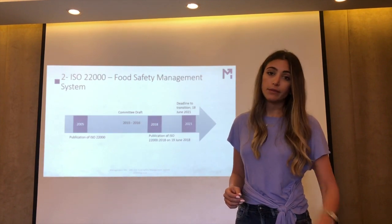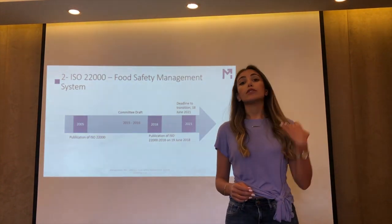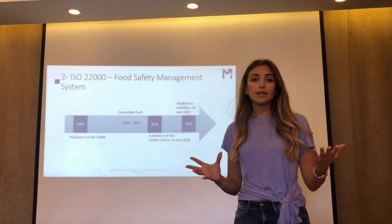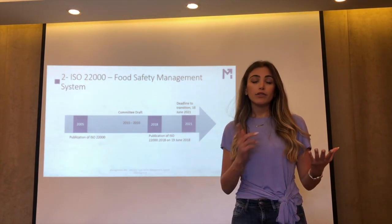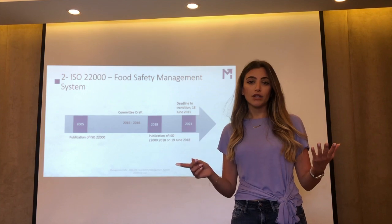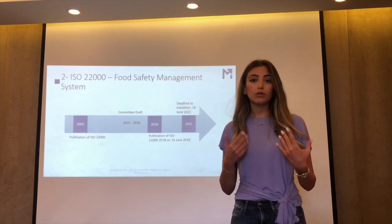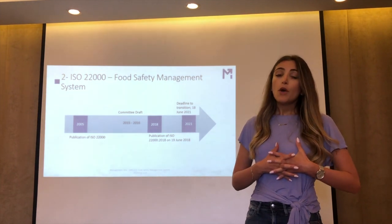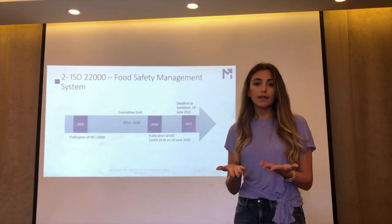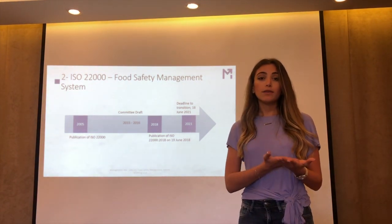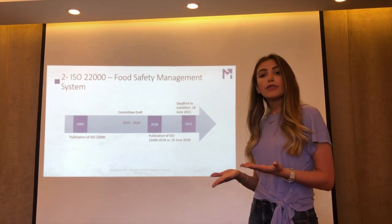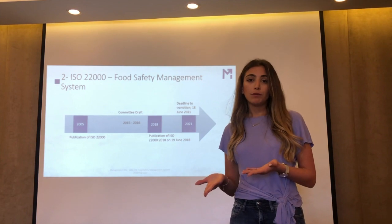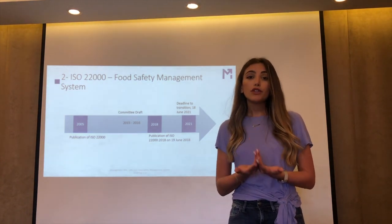So what do we mean by ISO 22000? ISO 22000 is the international standard for a food safety management system that has been set out by the International Organization for Standardization. It was first published in 2005 and was lately reviewed in 2018, which is why the new version is now called ISO 22000-2018. This standard sets out not only the procedural requirements but also the infrastructural requirements for the food safety management system.